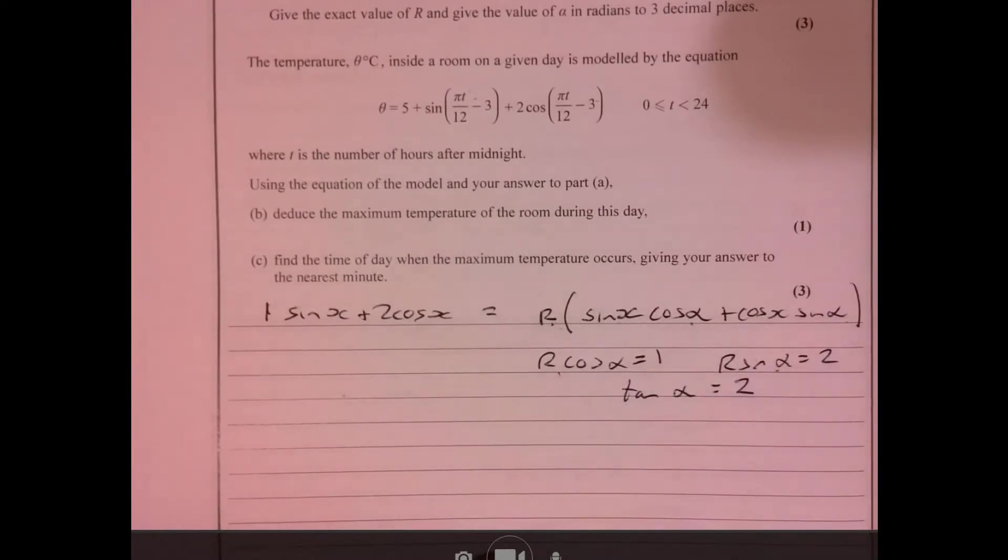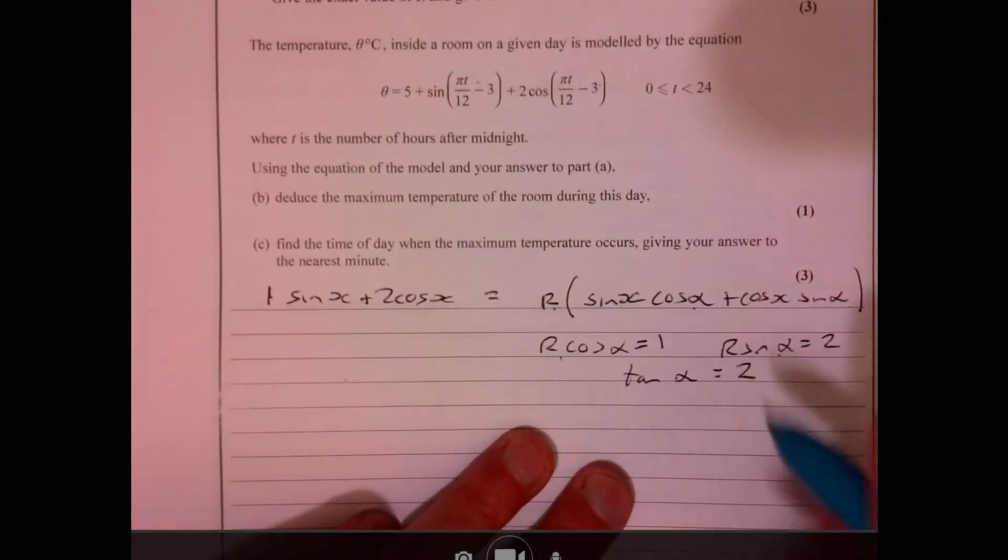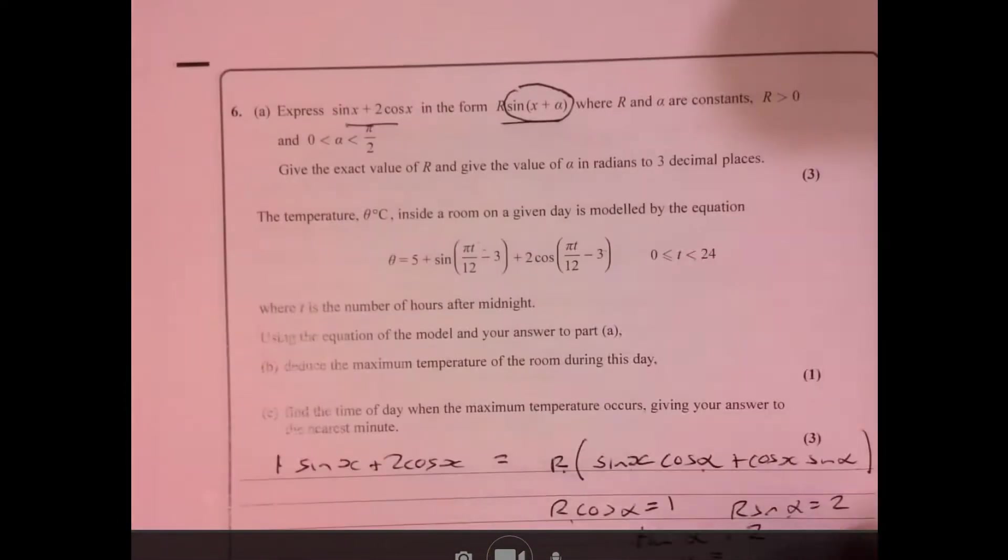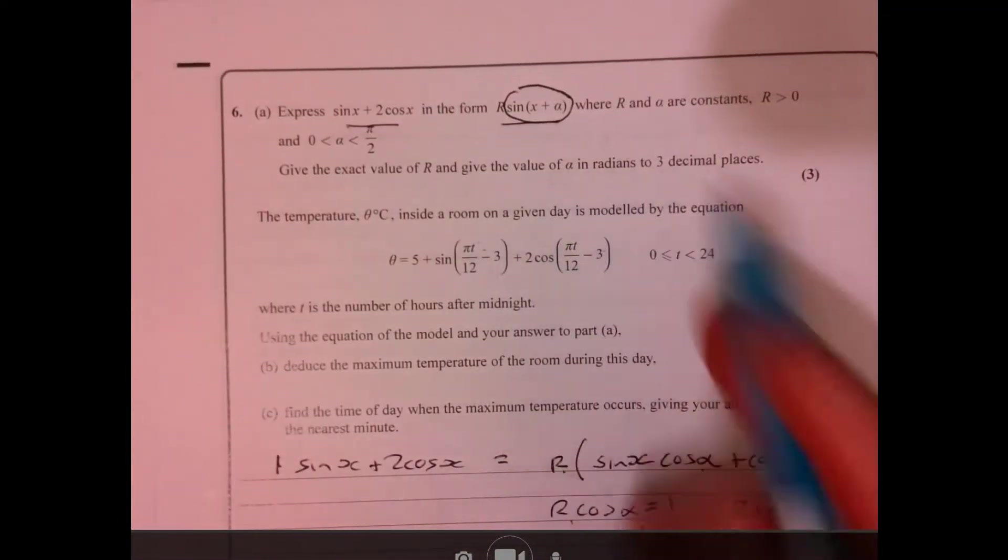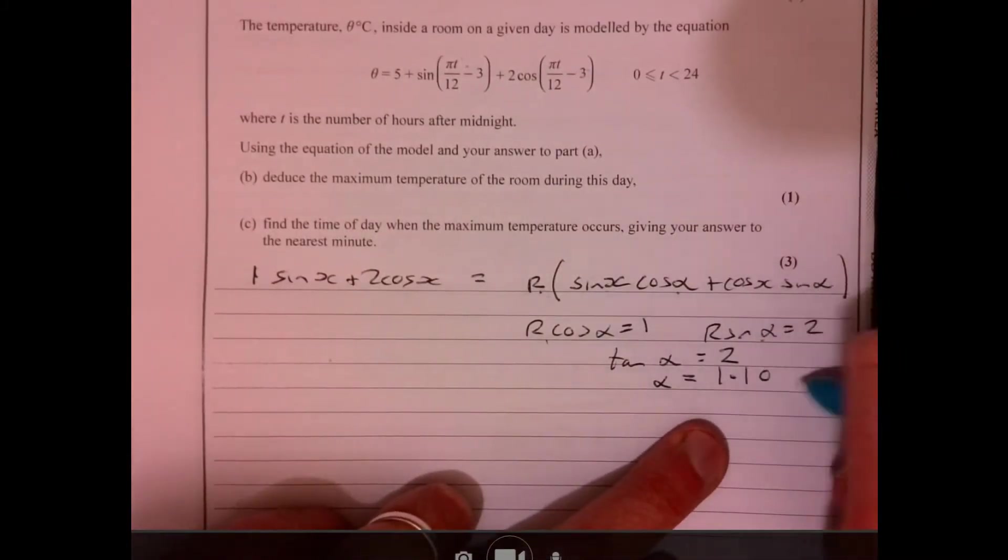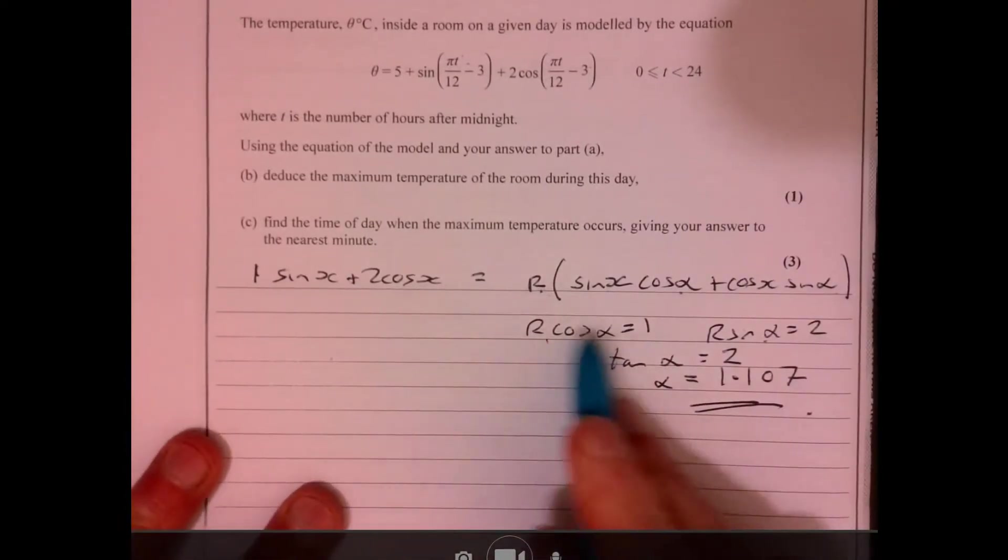Make sure that you're working in radians here. It does mention radians up here and it says to three decimal places, so that will give me 1.107.